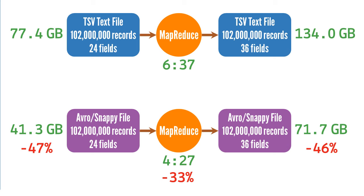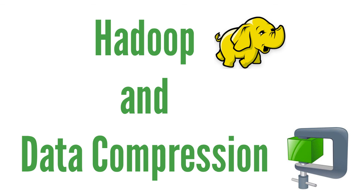This may be counterintuitive at first, because the MapReduce program had to spend time decompressing the Avro input file and compressing the Avro output file, but the gains made by moving around the smaller Avro files more than made up for the extra processing tasks. I hope you now understand why data compression with Hadoop is so beneficial. Use container file formats like Avro and Parquet and turn on their Snappy compression options. Thank you.